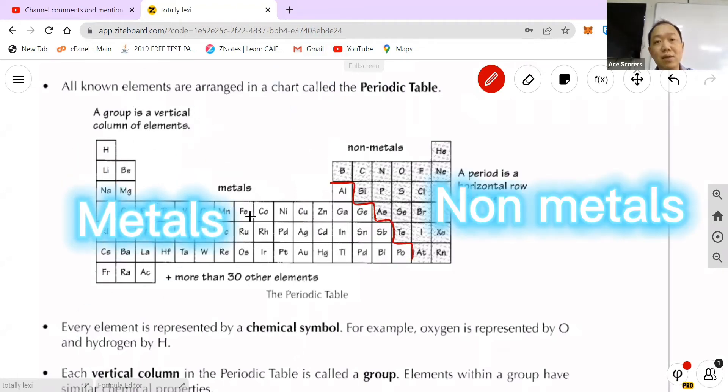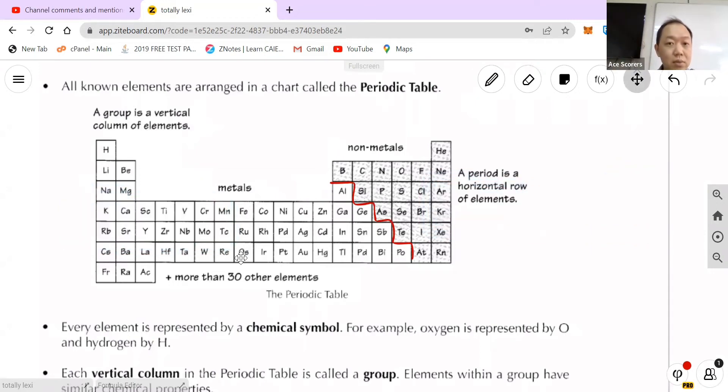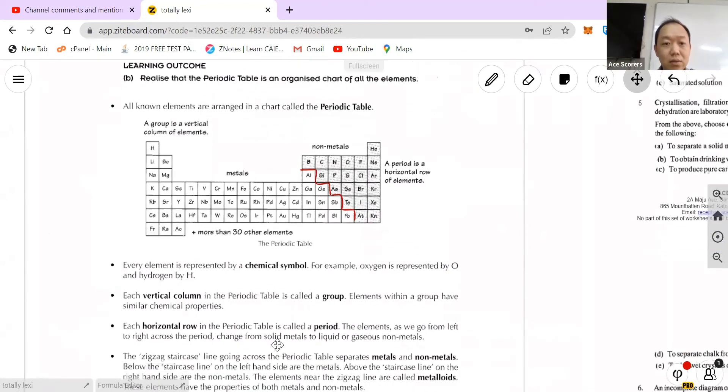Metals being on the left hand side and non-metals on the right hand side. So that will be the first definition that you need to know, definition of elements.